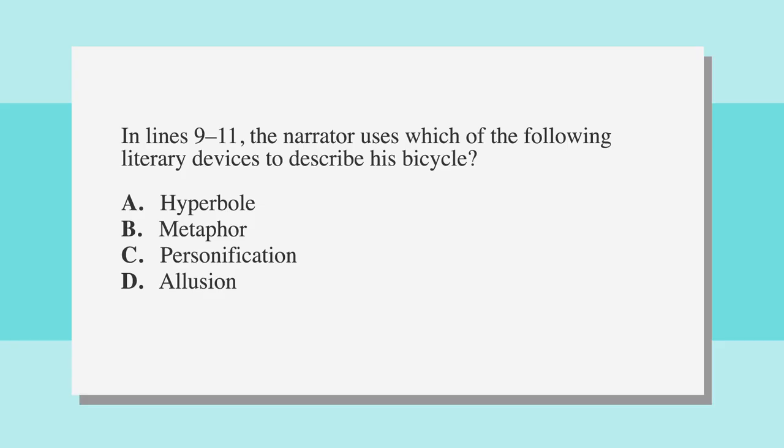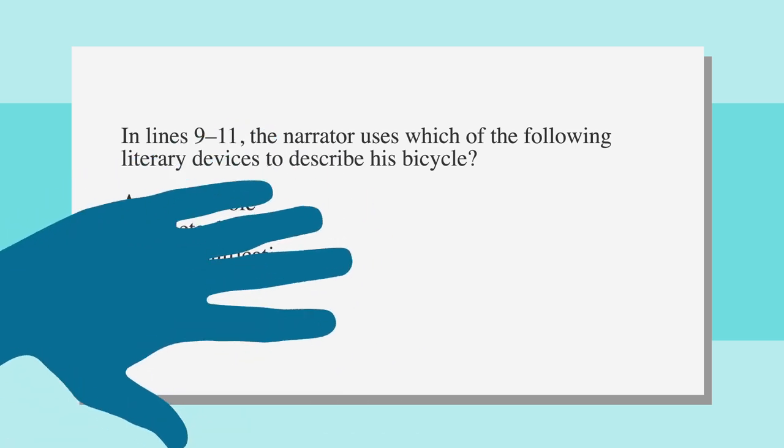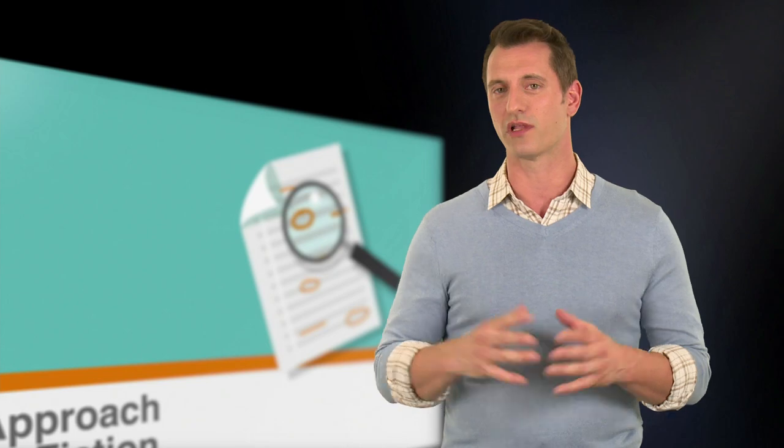Now that you've read the essay, let's go through some questions together. In lines 9 through 11, the narrator uses which of the following literary devices to describe his bicycle? Remember, don't look at the answer choices yet. Let's read a few lines above and below the line reference.